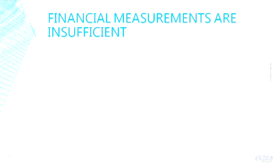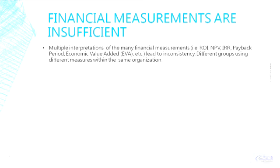When looking at IT, financial measurements are just not enough. There are multiple interpretations of the many financial measurements in the marketplace. Use of these lead to inconsistency, and different groups will use different measures within the same organization. Financial metrics also imply a precision that really doesn't exist. This gives the organization a false sense of credibility, and these estimates are driven by mostly undocumented assumptions.